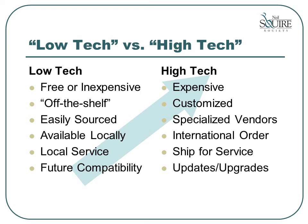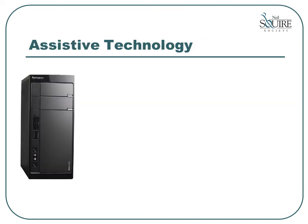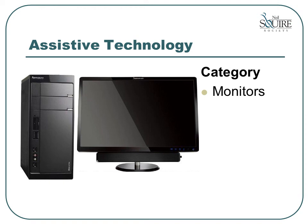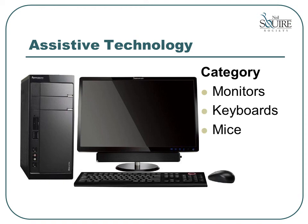The next three presentations will provide an overview of the assistive technology available on the market today. To make it easier to organize all of the equipment types that are available, I have divided the technology into three categories: monitors, keyboards, and mice. After this introductory presentation ends, please continue by viewing parts 2, 3, and 4. This concludes our introduction to assistive technology presentation. If you have any questions, please do not hesitate to contact your assigned facilitator. Thank you.